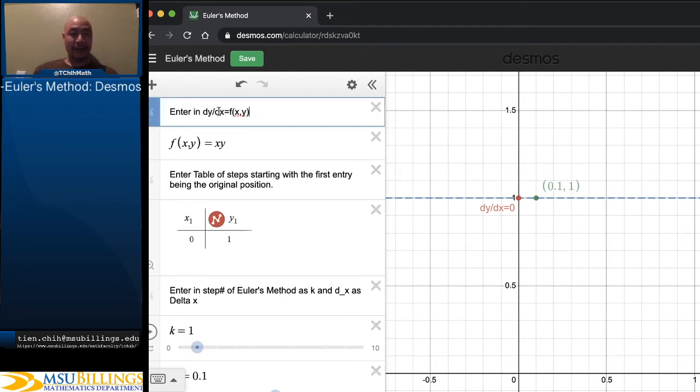We have f(x,y), which is going to represent the derivative of y with respect to x, dy/dx. And in this case, we're just using xy to be that differential equation, dy/dx is equal to xy. And we have our initial value when x is 0, y is 1.